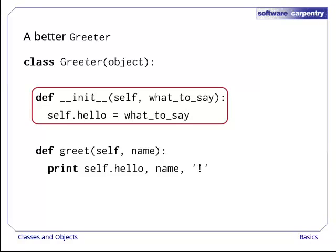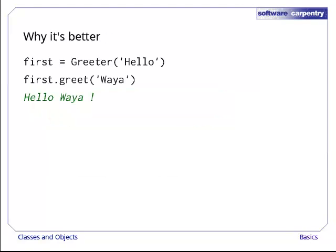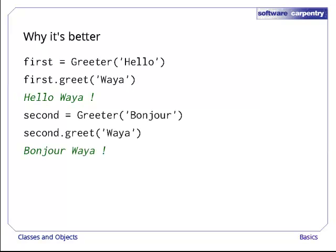Here's a better greeter class that uses a constructor. And here's why it's better. When we create the first object, we pass the string hello to the constructor, which stores that value in the object's hello member variable. We can then call the object's greet method right away. We don't have to remember to assign anything after creating the object. And of course, if we want to create a second object, we can do so and customize it as it's being created as well. Everything happens in one line, which is easier to read and much less error-prone.